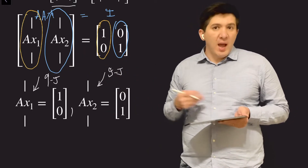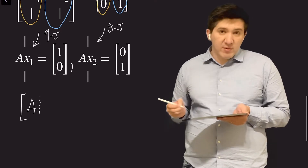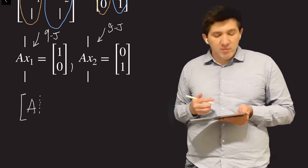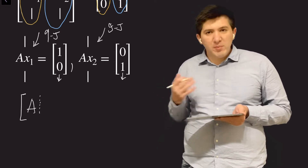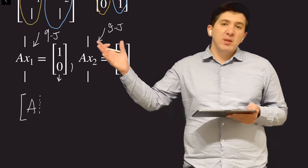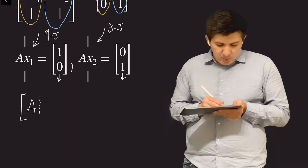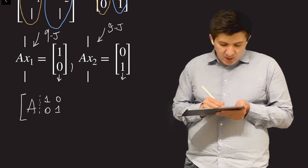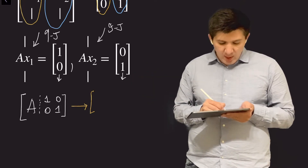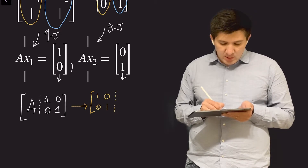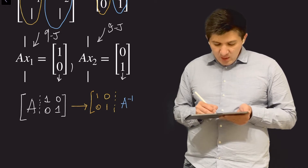To do this, I copy matrix A and append both right-hand side vectors — the columns of the identity matrix — right after it. So instead of creating an augmented matrix [A | b] with one vector b, I create [A | I], placing the identity matrix of the same size right after A. If A is invertible, the reduced row echelon form of this big augmented matrix will have the identity on the left and the inverse of A on the right.